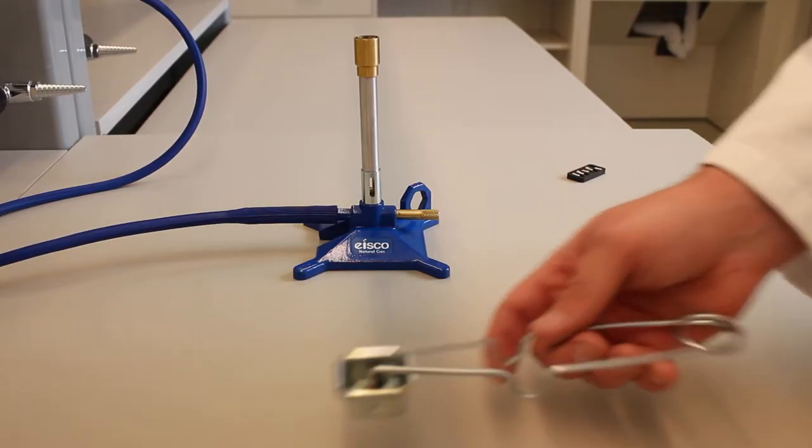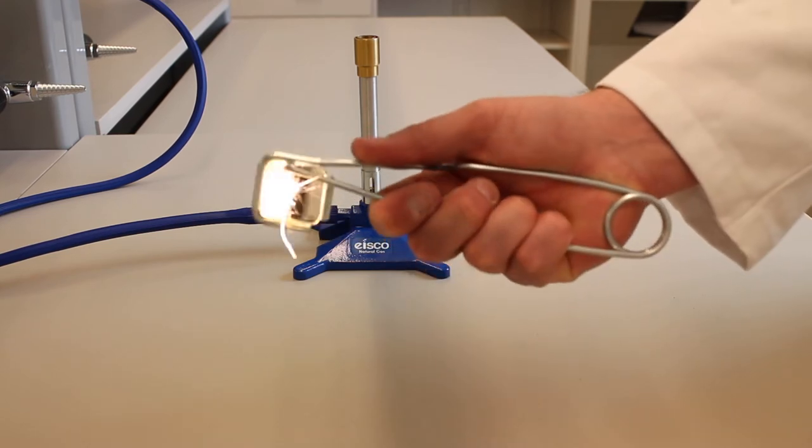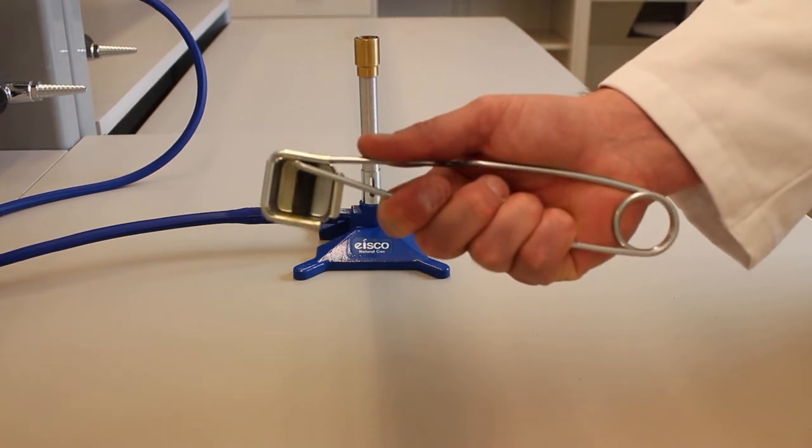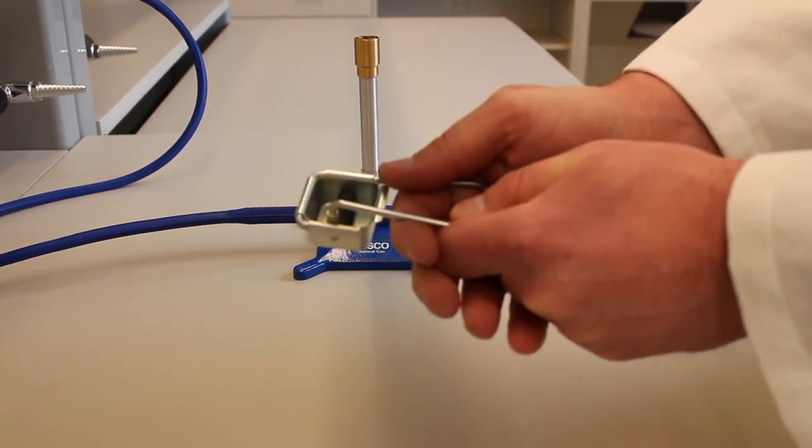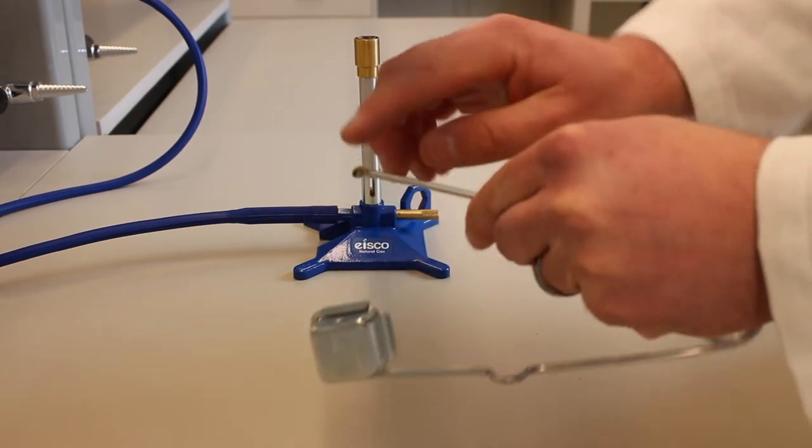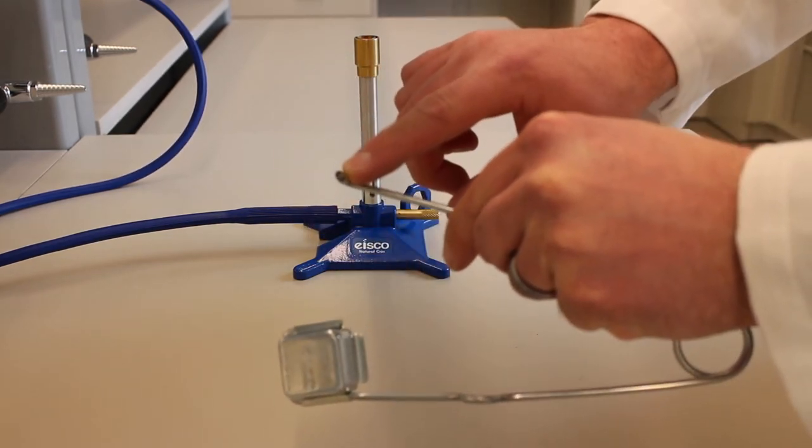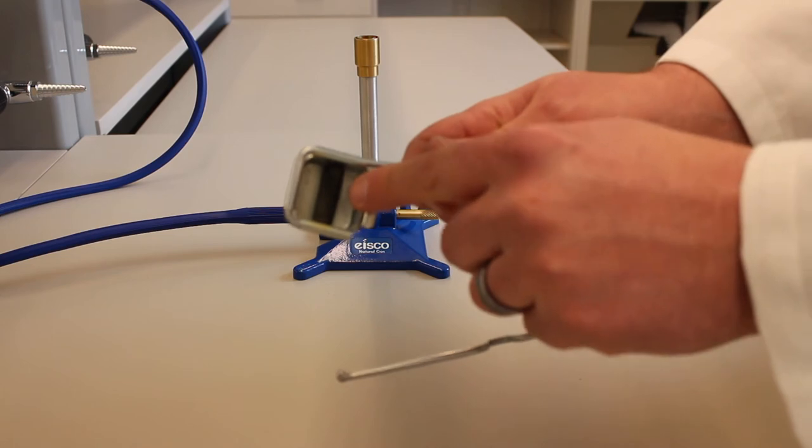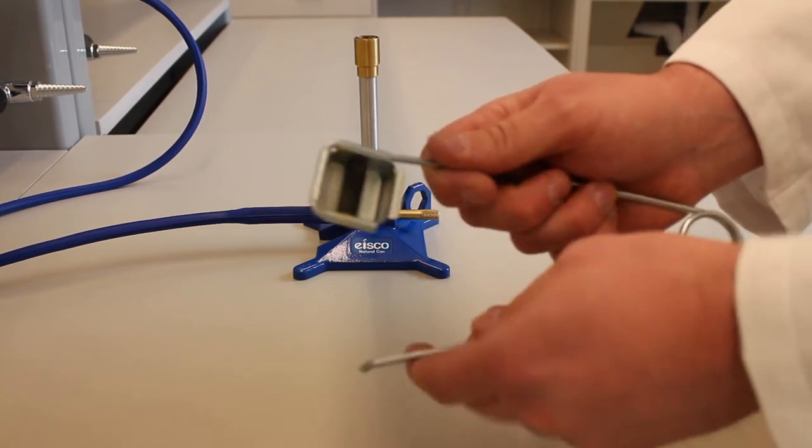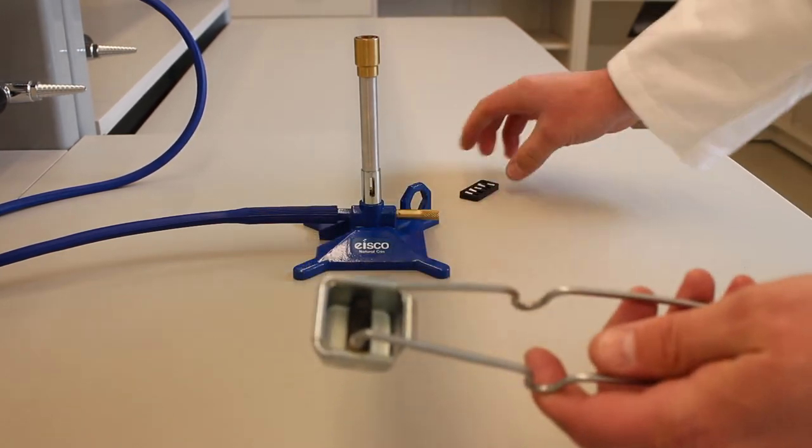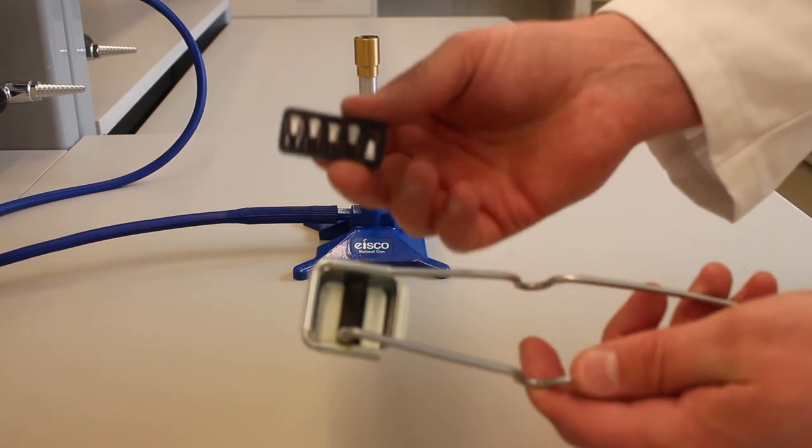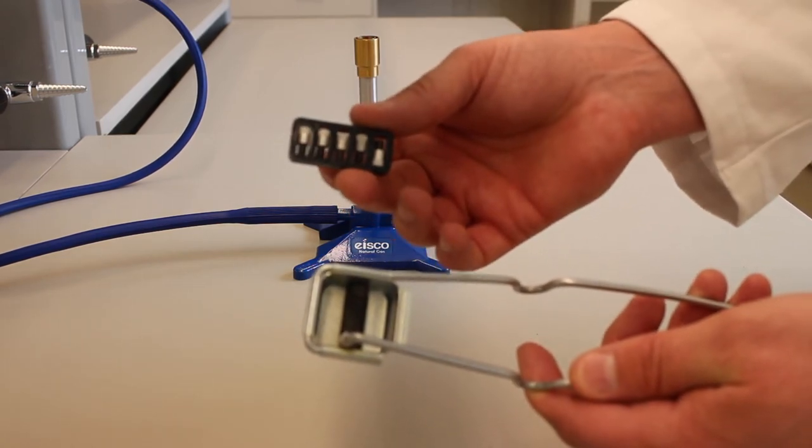To start a Bunsen burner, you'll need a striker. The striker will produce a spark that will ignite the gas coming from the burner. It consists of a tiny piece of flint which is rubbed across the rough metal surface inside the striker. If you ever see that this flint is worn down and is no longer visible, let your TA or instructor know so it can be replaced.